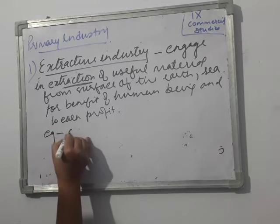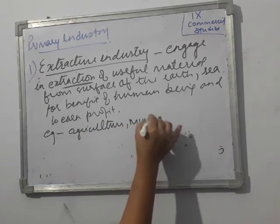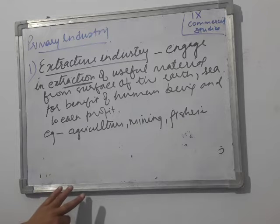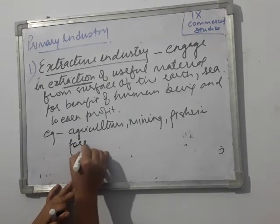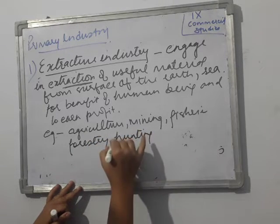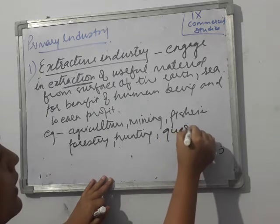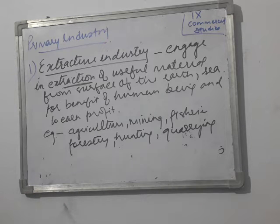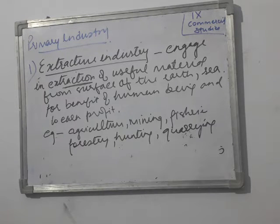The main examples of extractive industries are agriculture, mining, fishery, forestry, hunting, and quarrying (Q-U-A-R-R-Y-I-N-G). These industries are characterised by four distinctive features. First, they are among the oldest occupations.